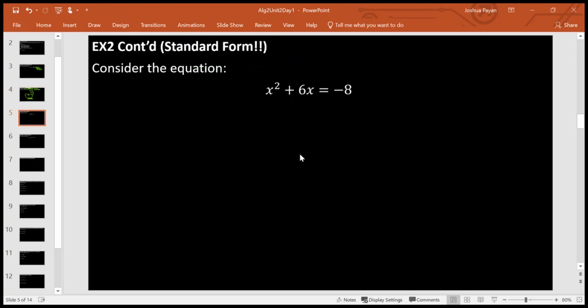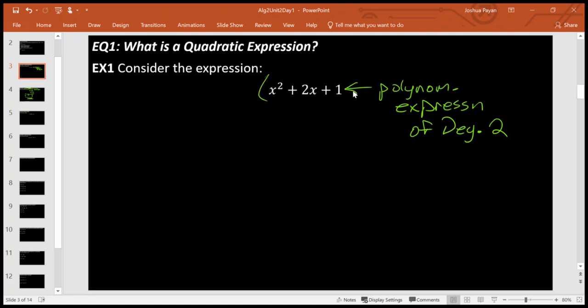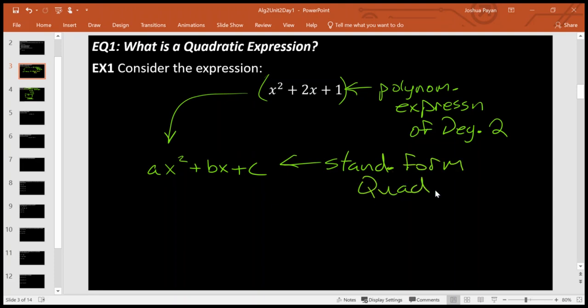Okay, so standard form. A standard form quadratic, let's go back to this first example here. So this is a quadratic expression and this guy here is in standard form. It's in the form ax squared plus bx plus c. This right here is standard form for quadratics, whether that's an expression or an equation. And here we see that a is 1, b is 2, and c is 1.